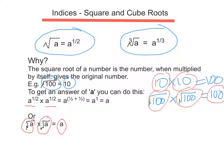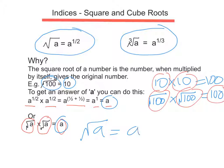Using our laws from indices — the first law — when you're multiplying you add the powers, so you end up with a to the half plus a half. A half plus a half is one, and because it's not necessary to show the power of one, the answer is simply a. As you can see both of these give the same answer of a, indicating that the square root of a is equal to a to the half power. We call the square root of a the surd form, and a to the power of a half the index form.